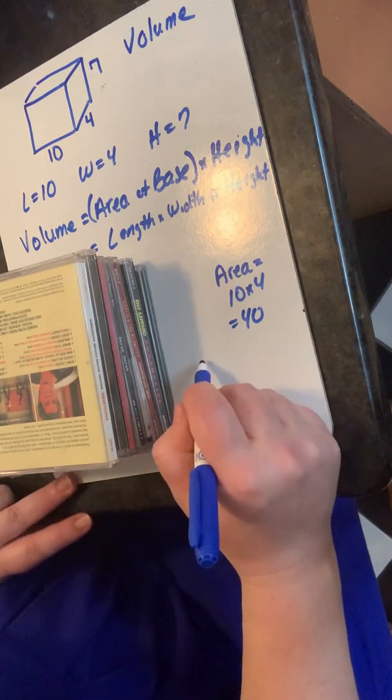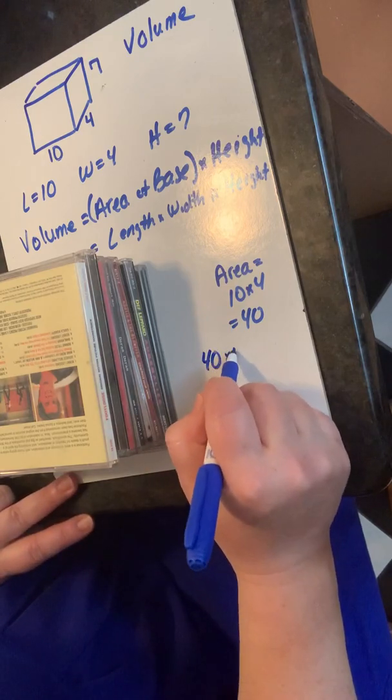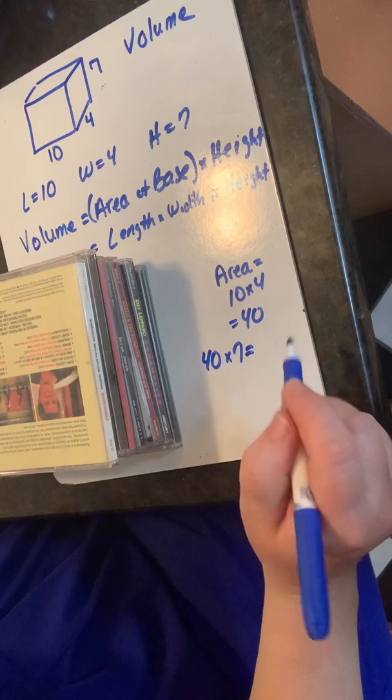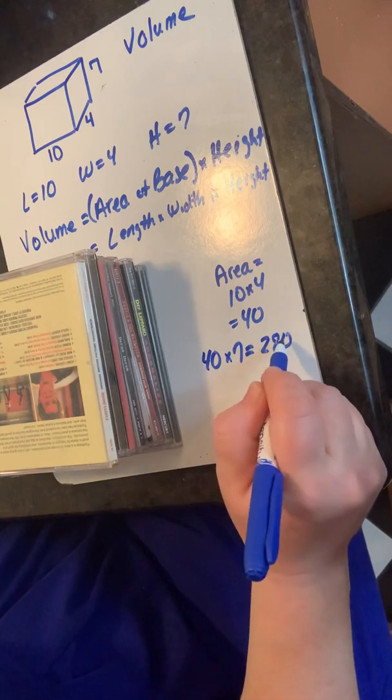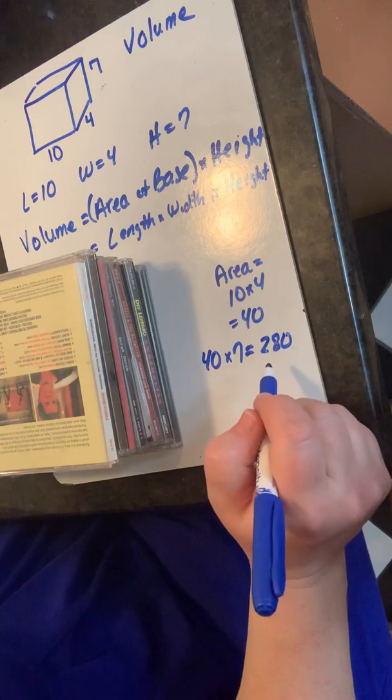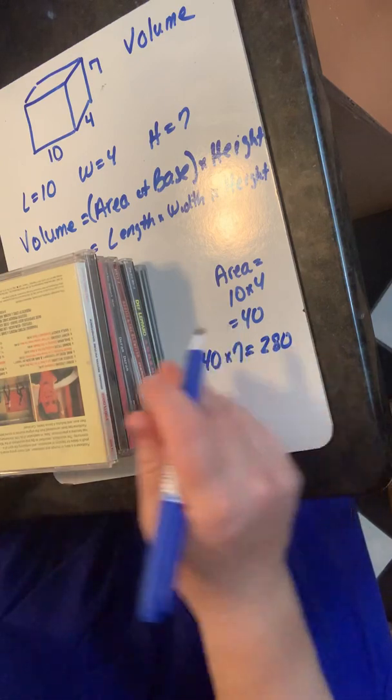I take the area of my base and multiply it by seven. Tomo el área de mi base y la multiplico por siete. I get two hundred eighty units cubed.